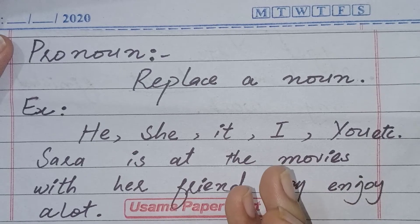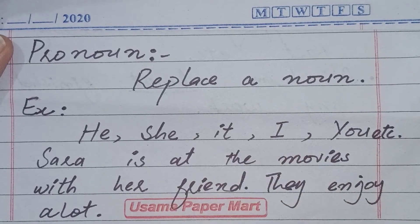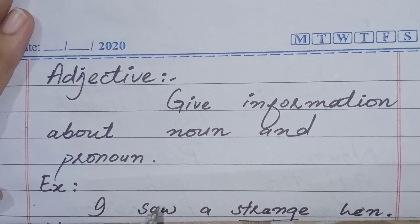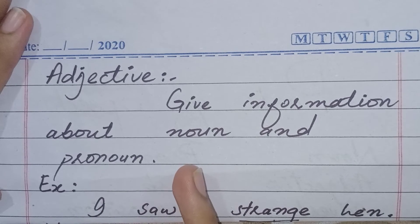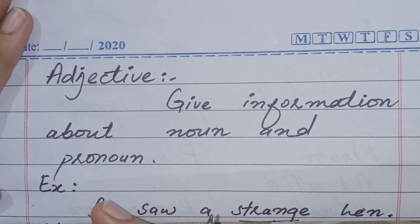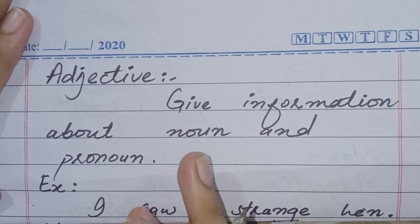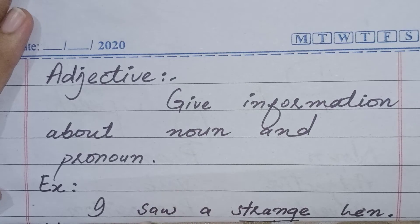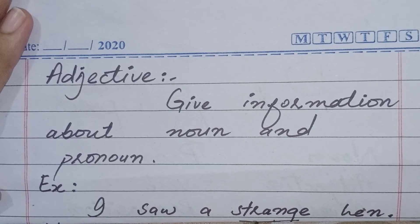Now we move to the third part of speech: adjective. An adjective gives information about a noun or pronoun — a word that qualifies and adds to the meaning of a noun or pronoun is called an adjective. For example, in the sentence 'I saw a strange hen,' the word 'strange' is the adjective.